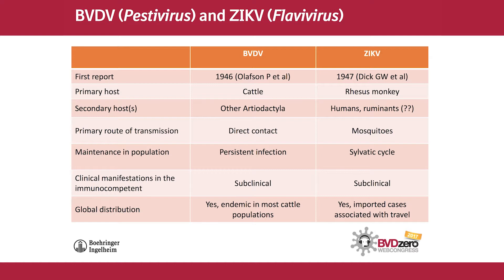Looking at the primary hosts: BVD virus has cattle as its primary host, but BVD virus is not host-restricted. It is capable of creating infections in many other artiodactyls, including white-tailed deer, sheep, goats, and pigs. Among the pestiviruses, BVD is the least host-restricted. The primary host for Zika virus is mainly the monkey — the rhesus monkey specifically. Secondary hosts include humans and potentially other animal hosts. There are several reports of seropositive goats and sheep, so there is some question as to whether Zika virus is not entirely host-restricted either.